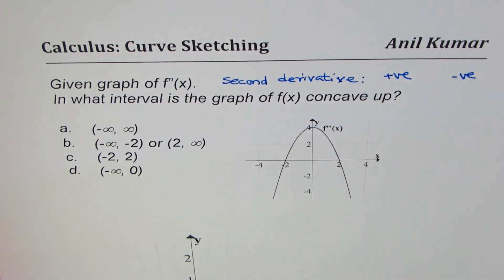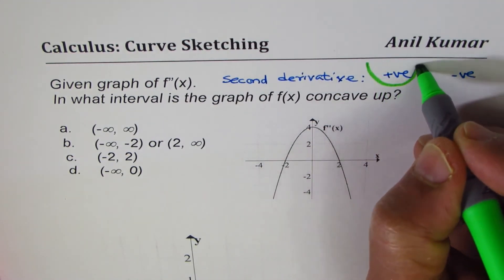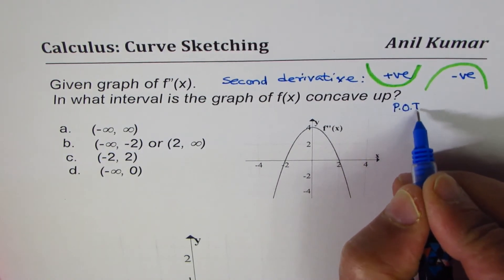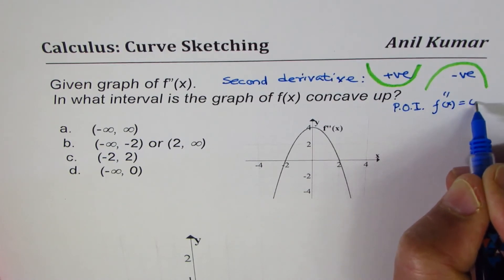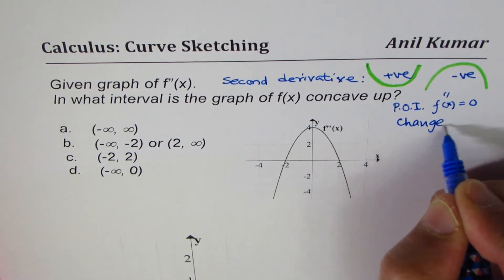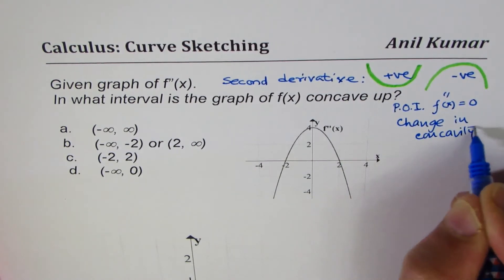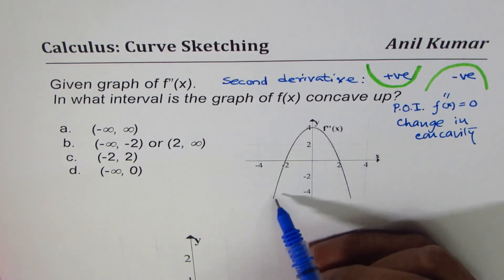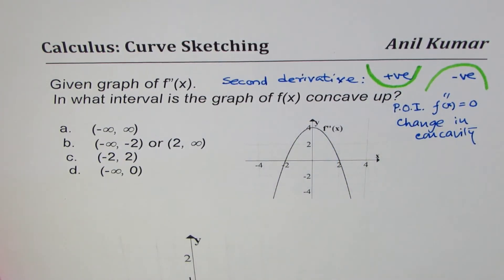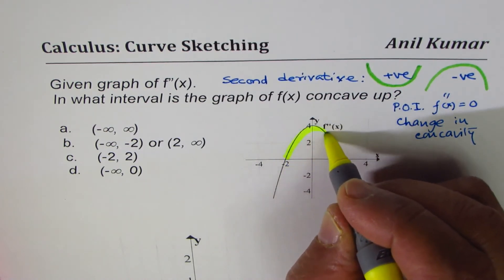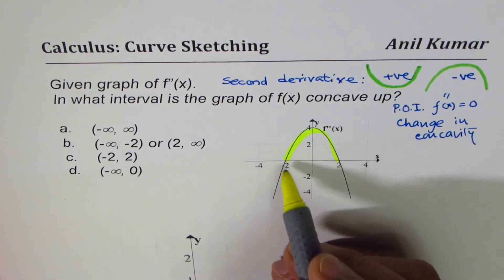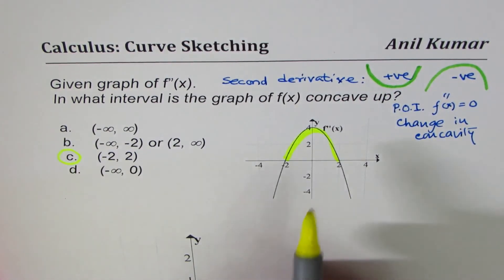In what interval is the function concave up? When the second derivative is positive the function is concave up, when it is negative the function is concave down, and when the second derivative is zero we can have a point of inflection — where the concavity changes. Analyzing the graph, we need to find where the second derivative is positive. It is clearly positive from minus 2 to plus 2, so during that interval the function is concave up.